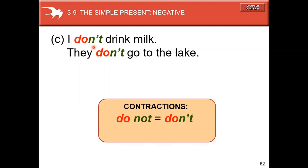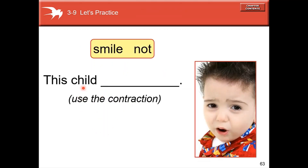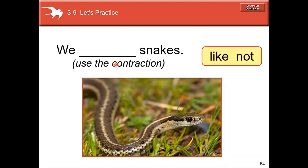Contractions: 'don't' is the contraction of 'do not,' and 'doesn't' is the contraction of 'does not.' Examples: 'I don't drink milk,' 'They don't go to the lake,' 'This child doesn't smile,' 'We don't like snakes.'